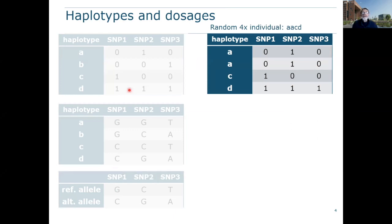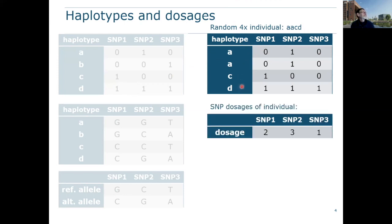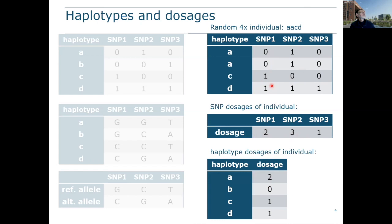An individual is composed of a number of haplotypes at the haploblock. For a tetraploid individual, we have four haplotypes — because it's tetraploid, you always have four. In this example individual, it has the genotype in haplotype terms: A, A, C, D — two copies of haplotype A, one of haplotype C, and one of haplotype D. The SNP dosages we get from the SNP array are, for this example individual, two, three, and one — just the number of ones summed over all four haplotypes.